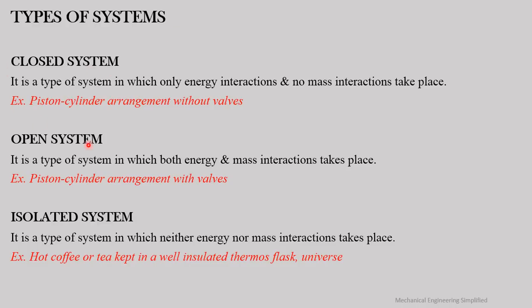Systems are classified into three categories: closed system, open system, and isolated system. A closed system is one in which only energy interaction takes place and no mass interaction. A simple example is a piston-cylinder arrangement without valves — no mass can enter or leave the system, but energy can enter or leave.